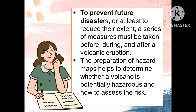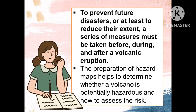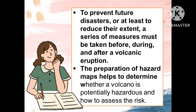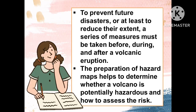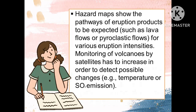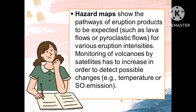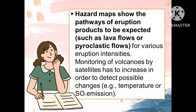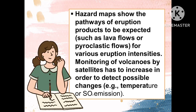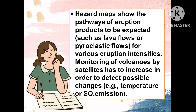To prevent future disasters, or at least to reduce their extent, a series of measures must be taken before, during, and after a volcanic eruption. The preparation of hazard maps helps to determine whether a volcano is potentially hazardous and how to assess the risk. Hazard maps show the pathways of eruption products to be expected, such as lava flows or pyroclastic flows, for various eruption intensities.